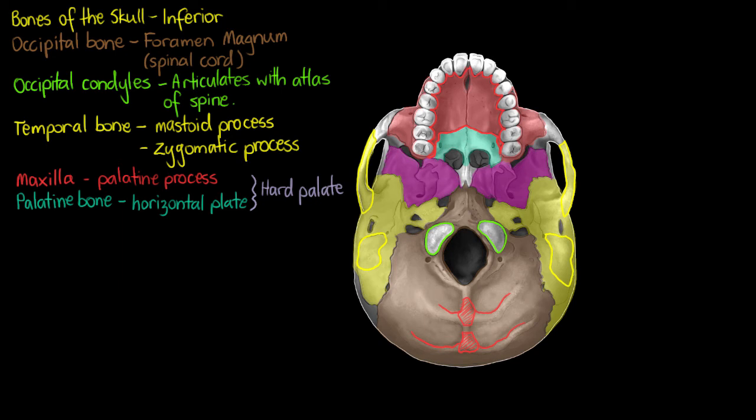Next below that we can see our sphenoid bone. Our sphenoid bone we saw mostly on the inside of the optic cavities from the anterior view and a small portion on the lateral surface.